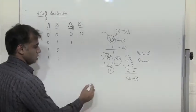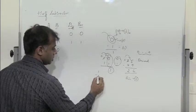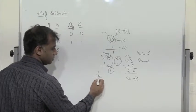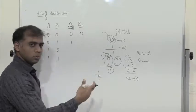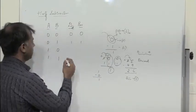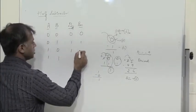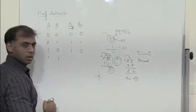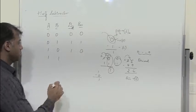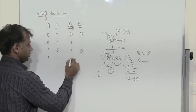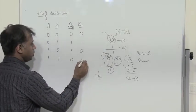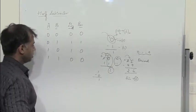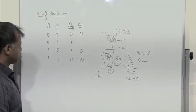Next, 1 minus 0 is very simple. There is no borrow required. So difference is 1, borrow is 0. For 1 minus 1: difference is 0, borrow is also 0.